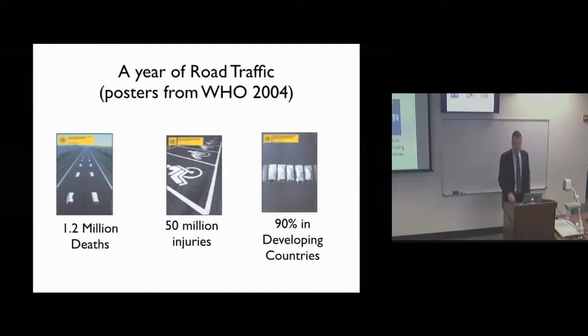The WHO in 2004 put out these posters summarizing what happens on the roads on an annual basis at that time. The roads bring across the world 1.2 million deaths, today it's 1.3 million.